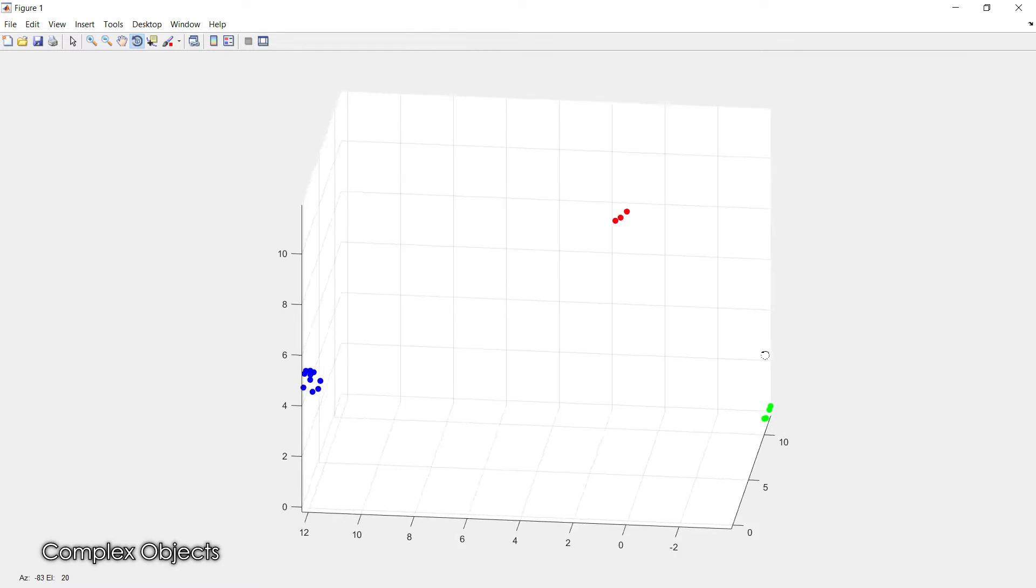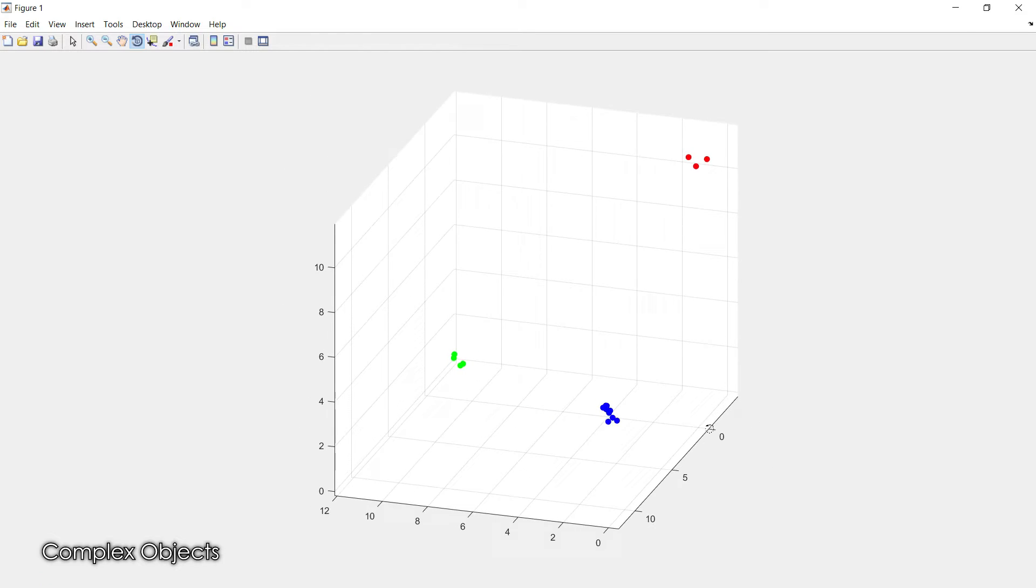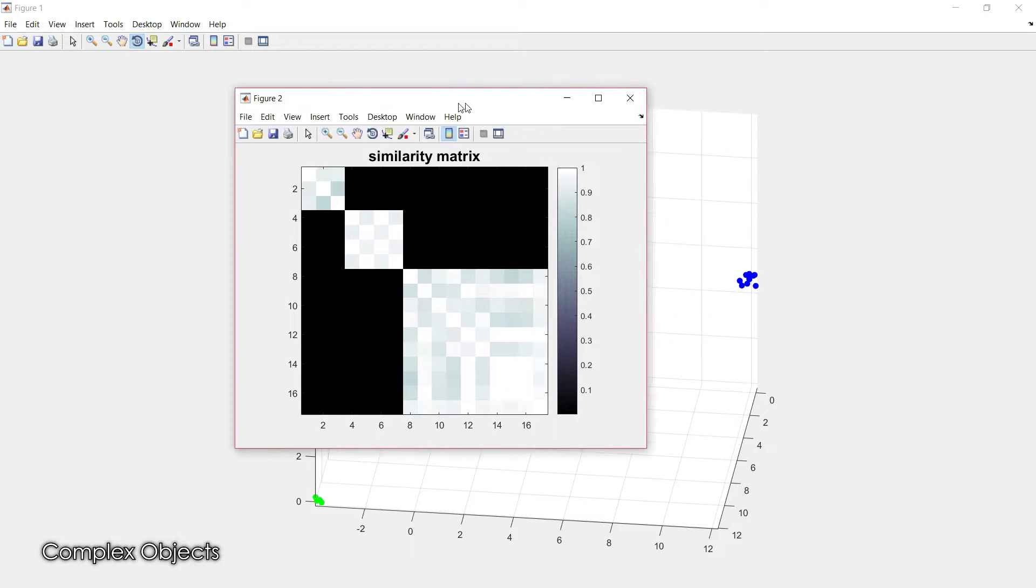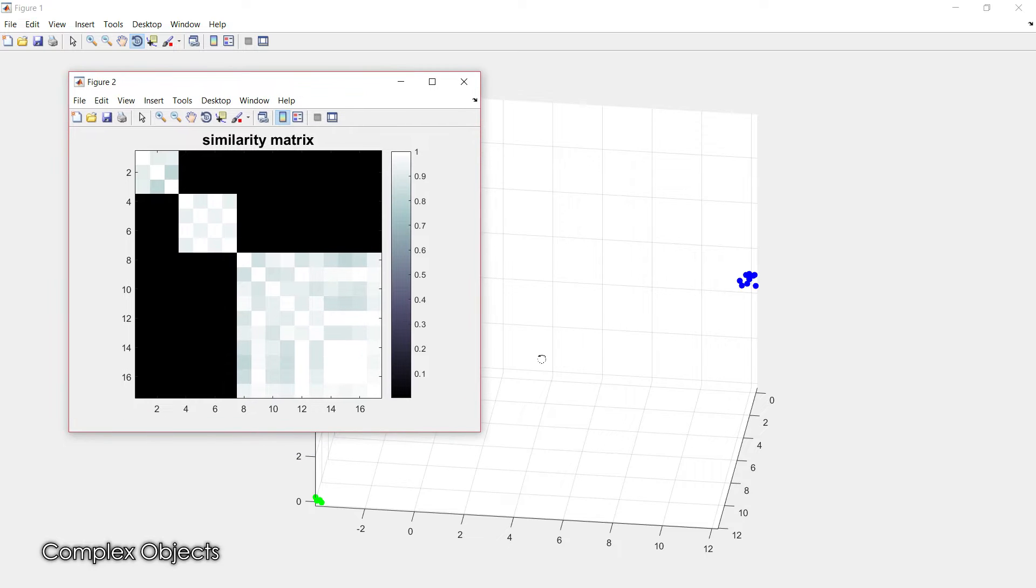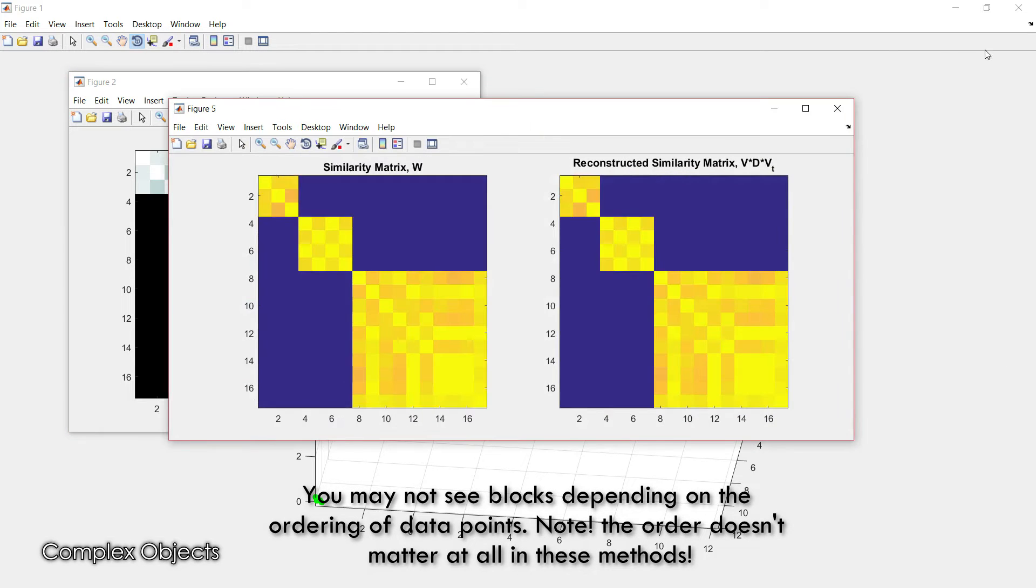When you create the similarity matrix, you're going to expect to see something with this kind of block diagonal structure. The reason is because each of these blocks represents each of the clusters—within each cluster they have high similarity to themselves but low similarity to points outside their own cluster.